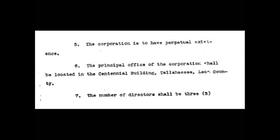Number 6: the principal office of the corporation shall be located in the Centennial Building, Tallahassee, Leon County. Number 7: the number of directors shall be 3. Number 8: the names of the directors who shall hold office for the first year, or until their successors are elected and have qualified, and their post office addresses are as follows: Harry O'Coghlan, 150 Broadway, New York, New York; Samuel B. Howard, 150 Broadway, New York, New York; Arthur W. Britton, 150 Broadway, New York, New York. Number 9: the names and post office addresses of the subscribers of this certificate, and the number of shares each agrees to take, are as follows: Lewis B. Gunther, 150 Broadway, New York, New York — two shares; Samuel B. Howard, 150 Broadway, New York, New York — two shares; Arthur W. Britton, 150 Broadway, New York, New York — one share.